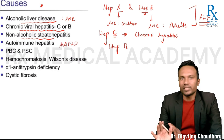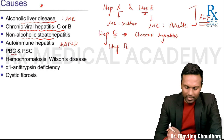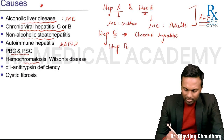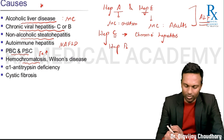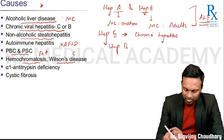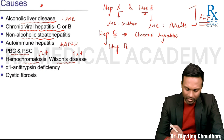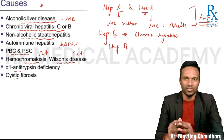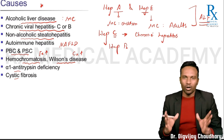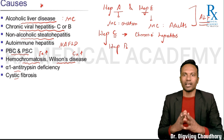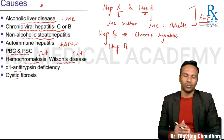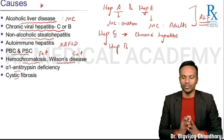Then you have alcoholic and non-alcoholic steatohepatitis — we have already discussed non-alcoholic fatty liver disease. Then you have cholestatic conditions like primary biliary cirrhosis and primary sclerosing cholangitis. Metabolic diseases include hemochromatosis, which involves increased iron overload, and Wilson's disease, which involves increased copper overload. Genetic conditions such as alpha-1 antitrypsin deficiency and cystic fibrosis can also lead to chronic liver disease.